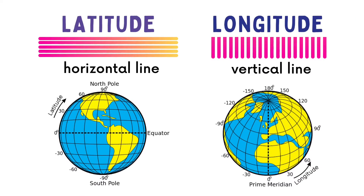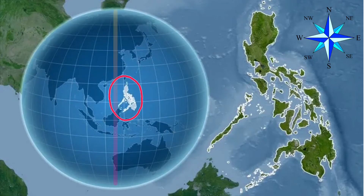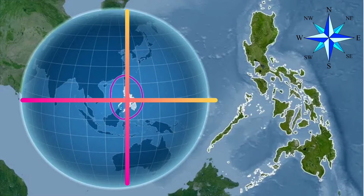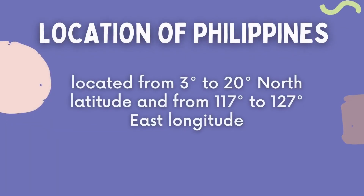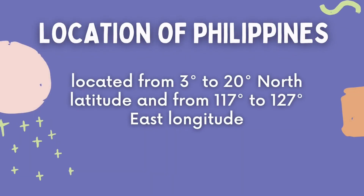Since latitude and longitude are measured in degrees, they work together on a map or globe to find exact locations. For example, if we want to know the exact location of the Philippines, we must mark the lines of latitude in degrees and add a direction which is either north or south, then also mark the lines of longitude in degrees on where it is found, plus the cardinal direction which is either east or west. Therefore, the Philippines can be located from 3 degrees to 20 degrees north latitude and from 117 degrees to 127 degrees east longitude. You can use your globe or map at home if you want to try locating places on Earth using latitude and longitude.